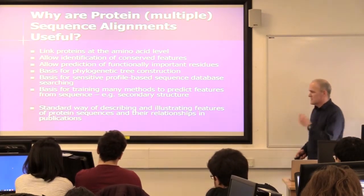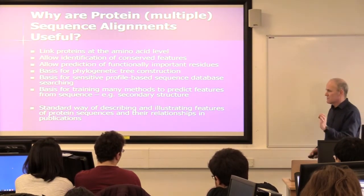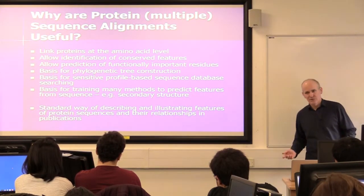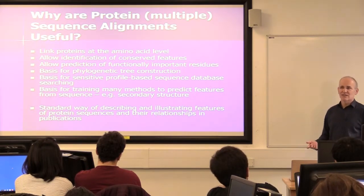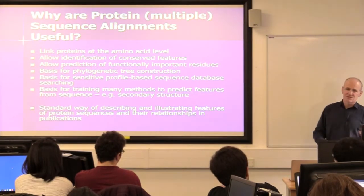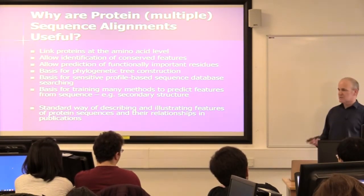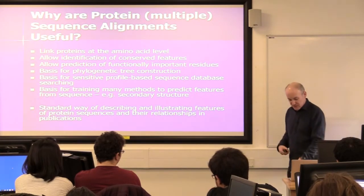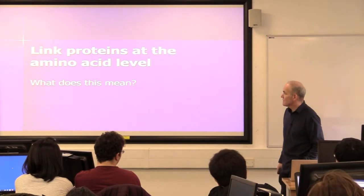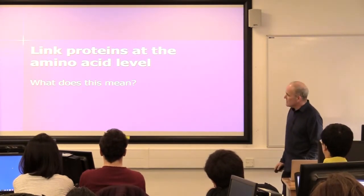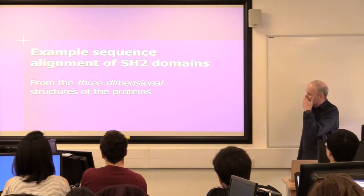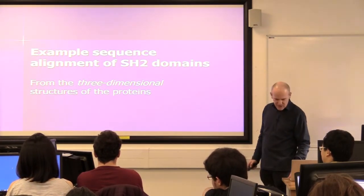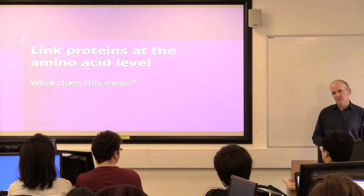That's one example where you can gain a lot of insight from a multiple alignment, which you can't get from just looking at protein sequences individually. And finally, alignment is a standard way of describing and illustrating features about protein sequences in publications. So if you do almost anything with a protein or a nucleic acid, and you want to say something about it in a publication, about particular residues, modifications you've made, things you've discovered about which residues are important, you'll probably show an alignment at some point in your paper. So when I say link proteins to the amino acid level, what does that mean?